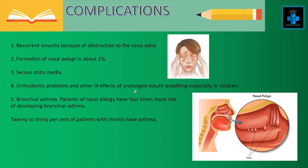The complications of allergic rhinitis include recurrent sinusitis due to obstruction of the sinus ostia, formation of nasal polyps in about 2% of cases, serous otitis media, orthodontic problems and other ill effects of prolonged mouth breathing especially in children. Bronchial asthma is another complication, as patients with nasal allergy have four times more risk of developing bronchial asthma — 20–30% of patients with rhinitis have asthma.